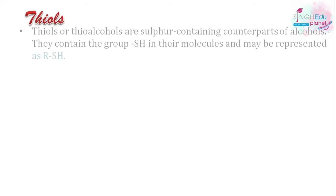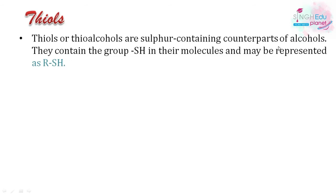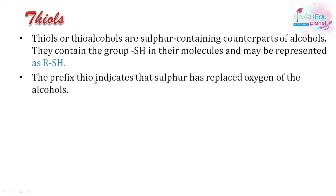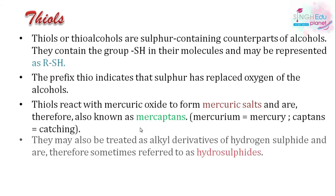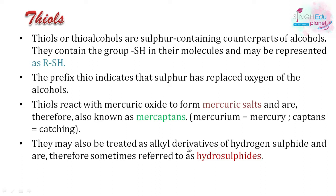The first topic in this chapter is thiols — sulfur-containing counterparts of alcohols. Just as we have R-OH for alcohols, in thiols we have R-SH. The prefix 'thio' means that oxygen has been replaced by sulfur. Thiols, when they react with mercury oxide, form mercury salts, which is why they are called mercaptans — from 'mercurium' meaning mercury and 'captans' meaning catching, i.e., they capture mercury. They can also be treated as alkyl derivatives of hydrogen sulfide (H₂S), where one alkyl group replaces a hydrogen, giving R-SH, so they are also called hydrosulfides.